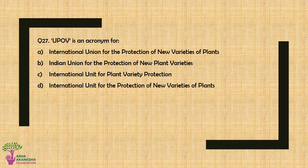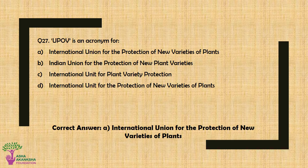Question No. 27: UPOV is an acronym for — Option A: International Union for the Protection of New Varieties of Plants, Option B: Indian Union for the Protection of New Plant Varieties, Option C: International Unit for Plant Variety Protection. The correct answer is Option A — International Union for the Protection of New Varieties of Plants.